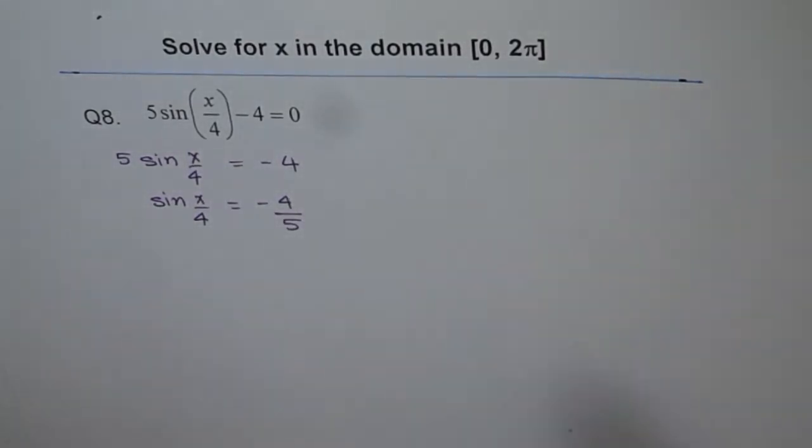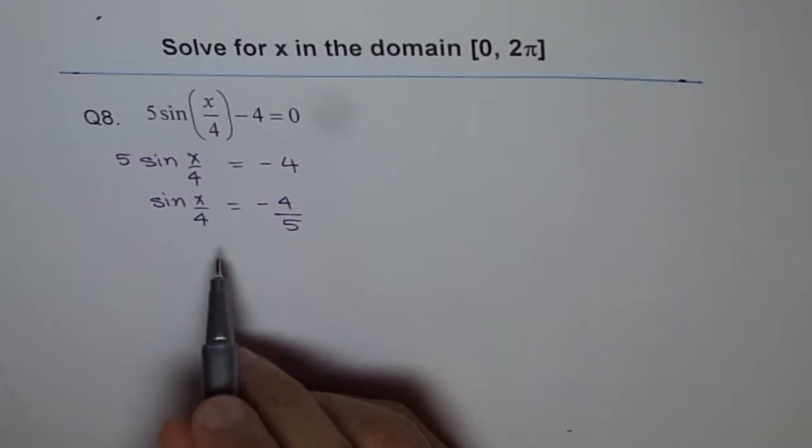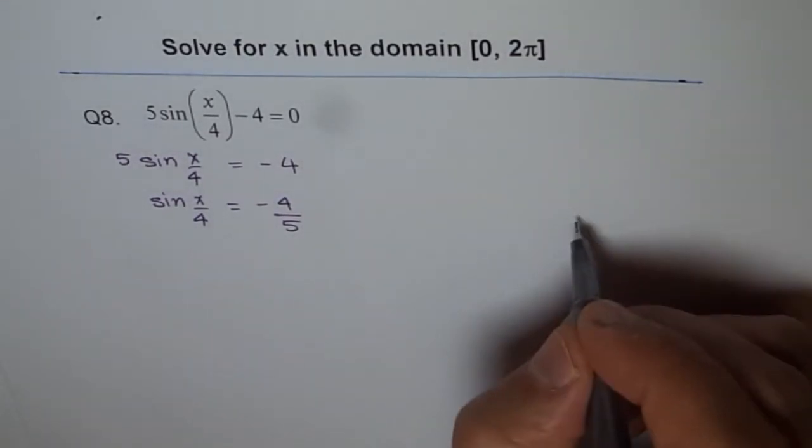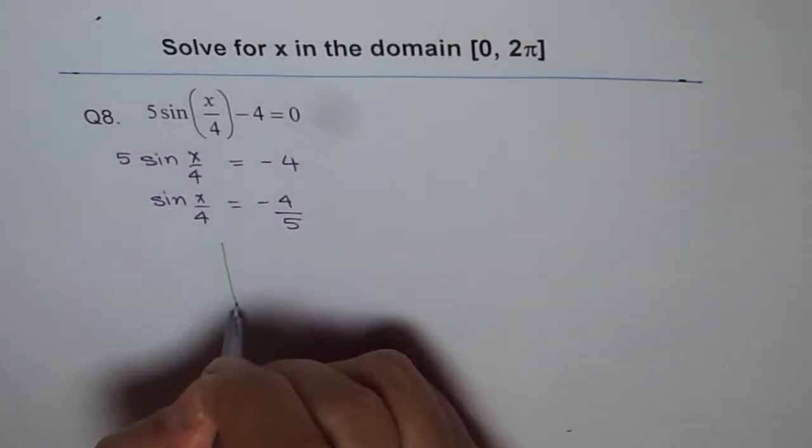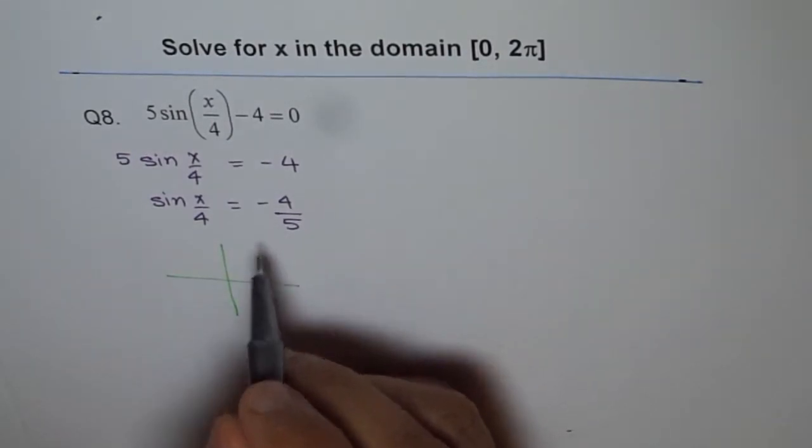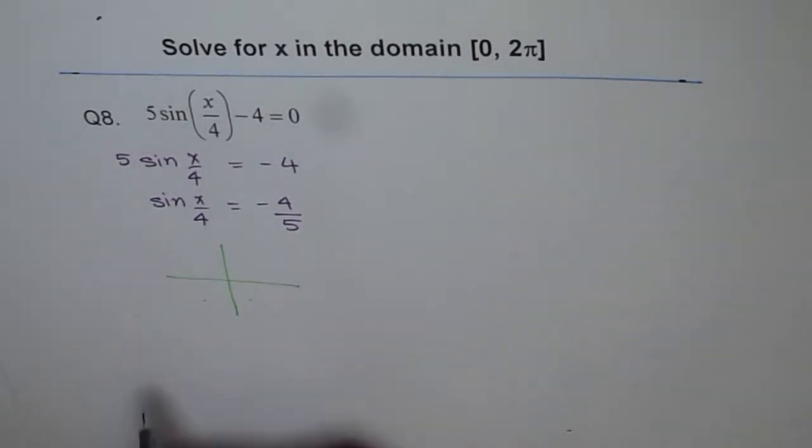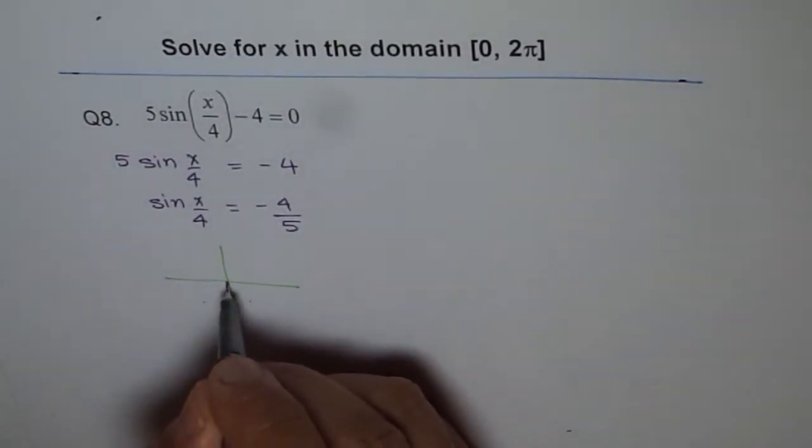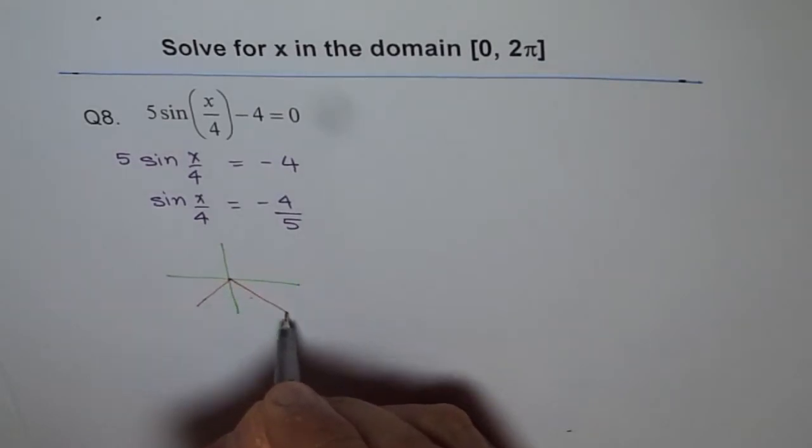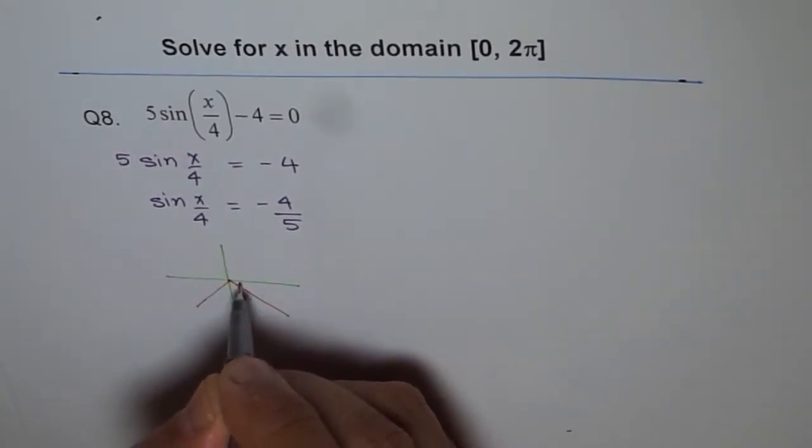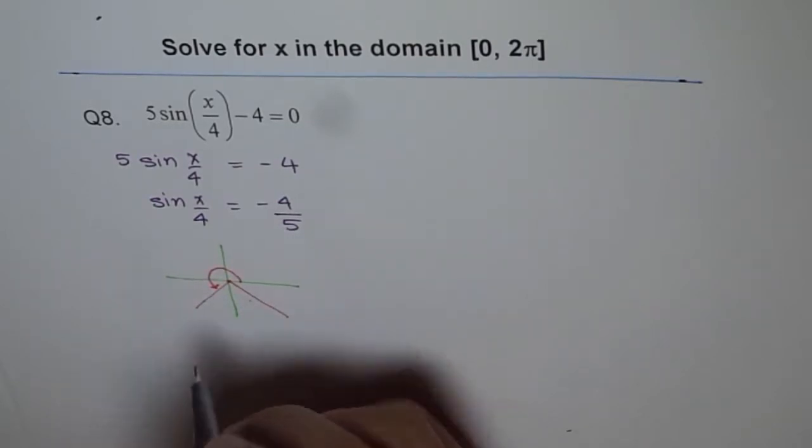Now we can write down the possible solutions. For sin, possible solutions will be in quadrant 3 and 4 since this is negative. So our answers will be in quadrant 3 and 4. These are our solutions, and we need to find this angle and the other angle.